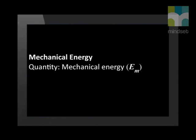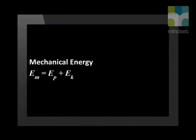As we have said, mechanical energy is the sum of the gravitational potential energy and the kinetic energy of a system. To represent the physical quantity, we use the symbol E_M. Since it is a form of energy, it is measured in joules, which has the symbol J. The total mechanical energy E_M equals the gravitational potential energy E_P plus the kinetic energy E_K.